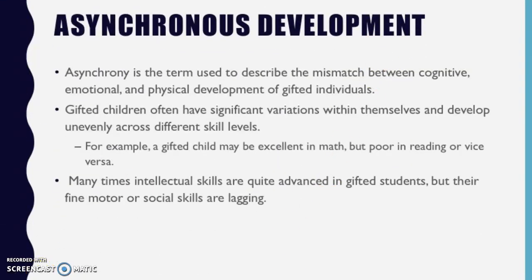Here's another main topic we're going to go over: asynchronous development. Asynchrony is a term used to describe the mismatch between cognitive, emotional, and physical development of gifted individuals. Gifted children often have significant variations within themselves and develop unevenly across different skill levels. For example, a gifted child may be excellent in math but poor in reading, or vice versa. All of these kids have different giftedness, and it varies throughout the range of topics.